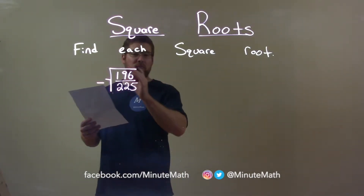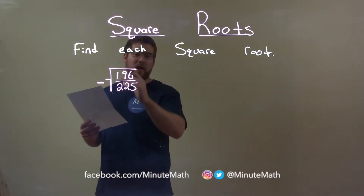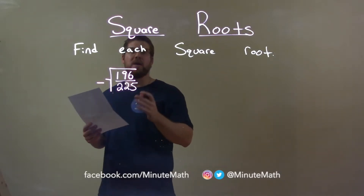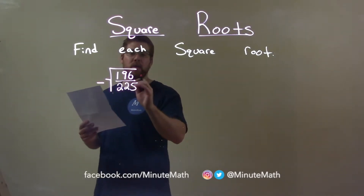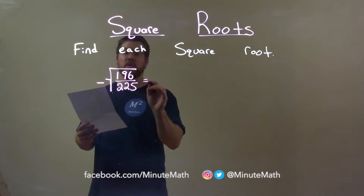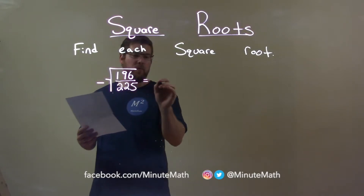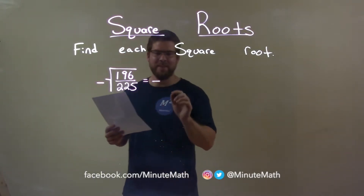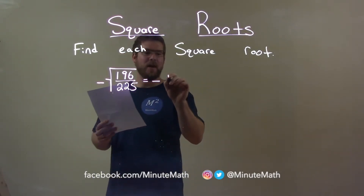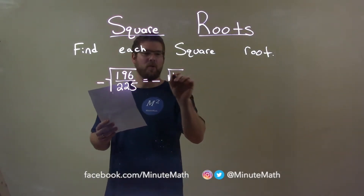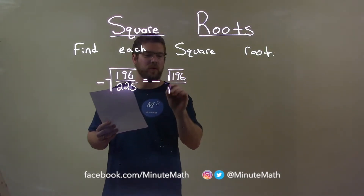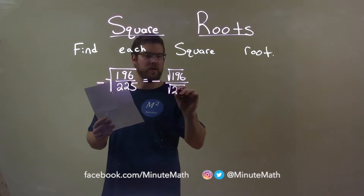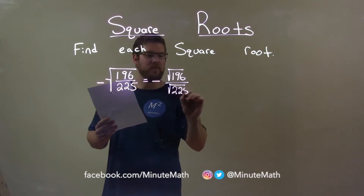With square roots of a fraction, we can take the square root of the numerator and denominator individually. So let's do that. Bring the negative over — don't forget it — but now we have the square root of 196 over the square root of 225.